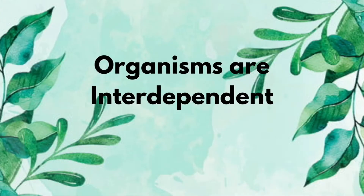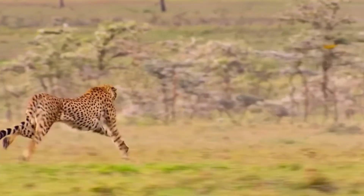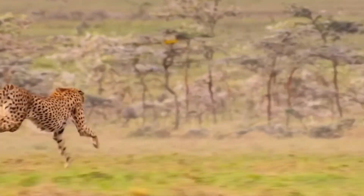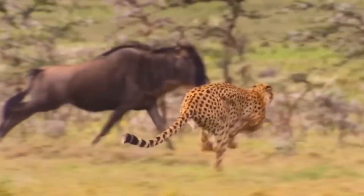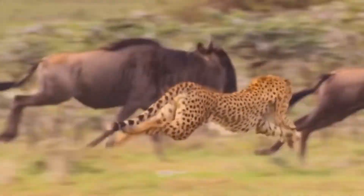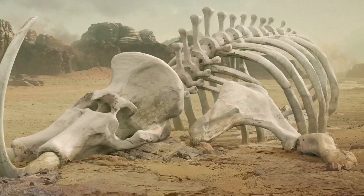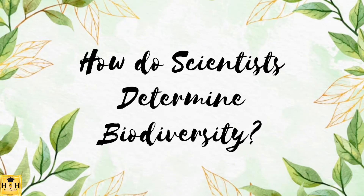Organisms are interdependent. Relationships among organisms are important because they help maintain the constant flow of energy and nutrients in the environment. The loss of any species in an interrelated ecosystem could affect many other species.